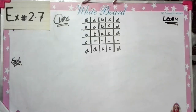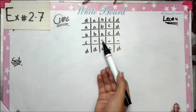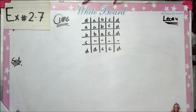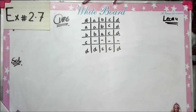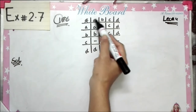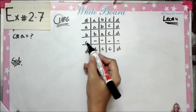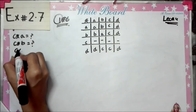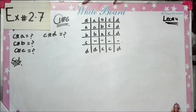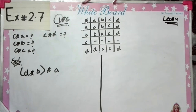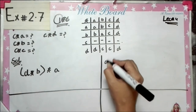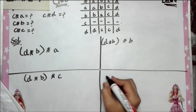Now let's do question number 6: supply the missing elements of the third row of the given table so that the operation may be associative. We need to find four values: C★A, C★B, C★C, and C★D, which are not yet available. We will use the associative law, which means the arrangement of terms does not matter. We will write D★(B★A) and work through all four values — A, B, C, D.